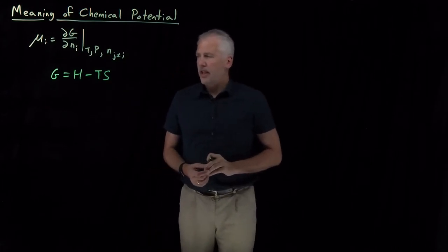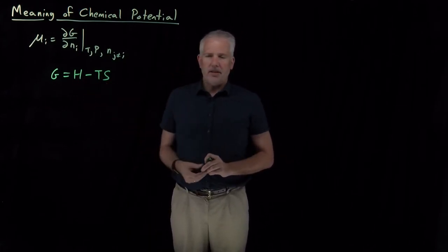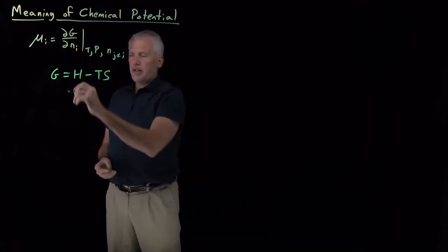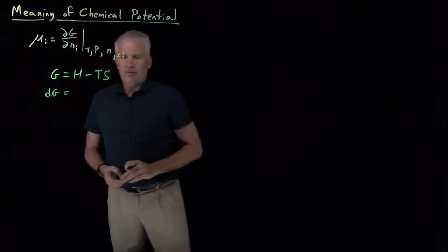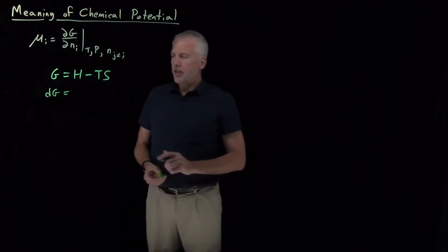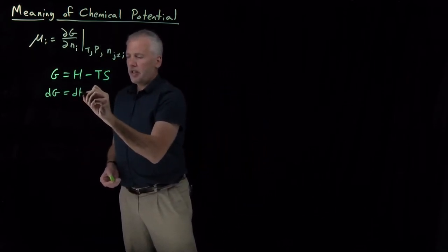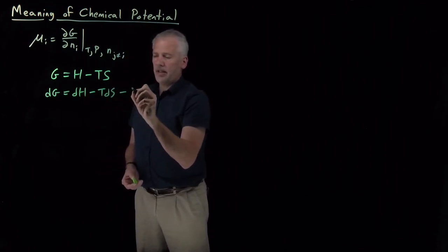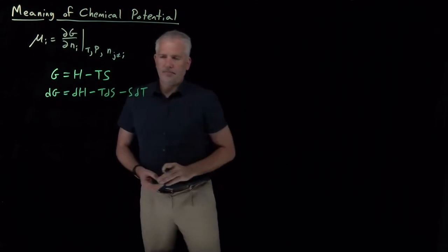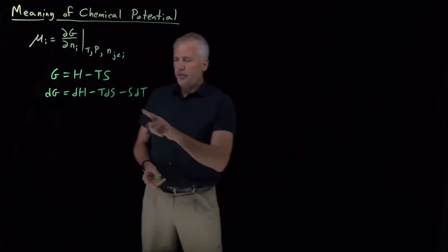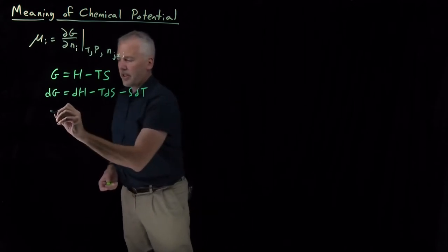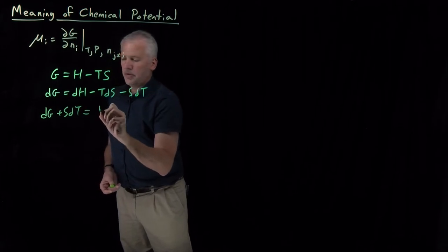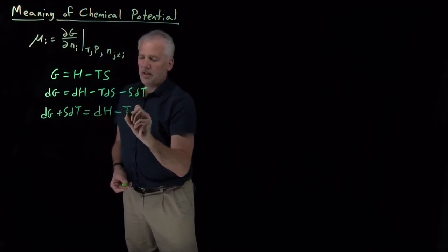For example, I can say the Gibbs free energy is the enthalpy minus T times S. Since we're talking about differentials, if I take the differential of both sides of the equation, dG is equal to dH, and the product rule on TS gives me TdS and SdT.